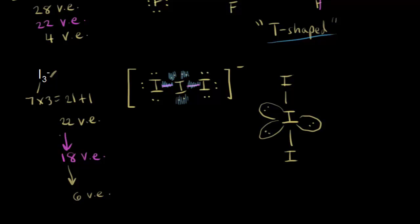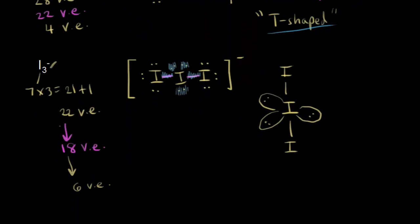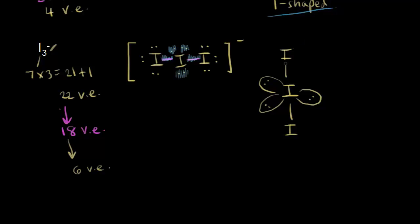In step four, we ignore the lone pairs of electrons around the central atom to determine molecular geometry. With just the two axial iodines remaining, the shape is linear. Since it's linear, we predict a bond angle of approximately 180 degrees. We've now done four examples of five electron clouds, each differing in the number of lone pairs around the central atom.